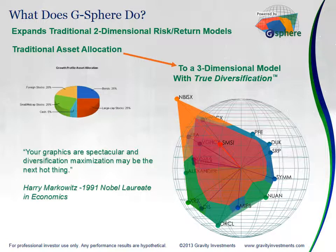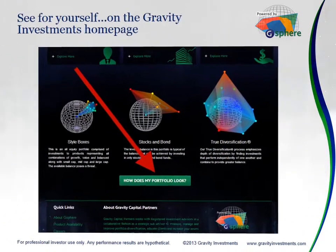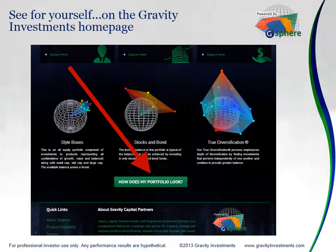The True Diversification process that visualizes diversification also maximizes diversification, and I encourage you to explore some of the other videos that can explain how that works. One thing you also might want to do is see it for yourself. There's a link on our homepage at www.gravityinvestments.com — you can click on the green button that says 'How does my portfolio look?' Punch in your portfolio or a prospect's portfolio and you'll get your visualization. It's interactive, it's 3D, it's pretty cool. You also get some diversification scores, and you'll really understand what's going on in that portfolio like you never had before.